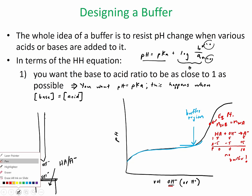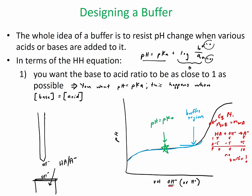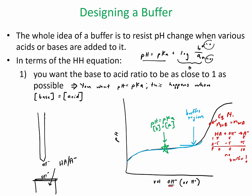So where is pH equal to pKa? It's right here — right in the middle. This is called the halfway point. The pH equals the pKa, and your concentration of base equals your concentration of acid for the conjugate pair at that point. So if you added any base, your buffer can consume this much base.